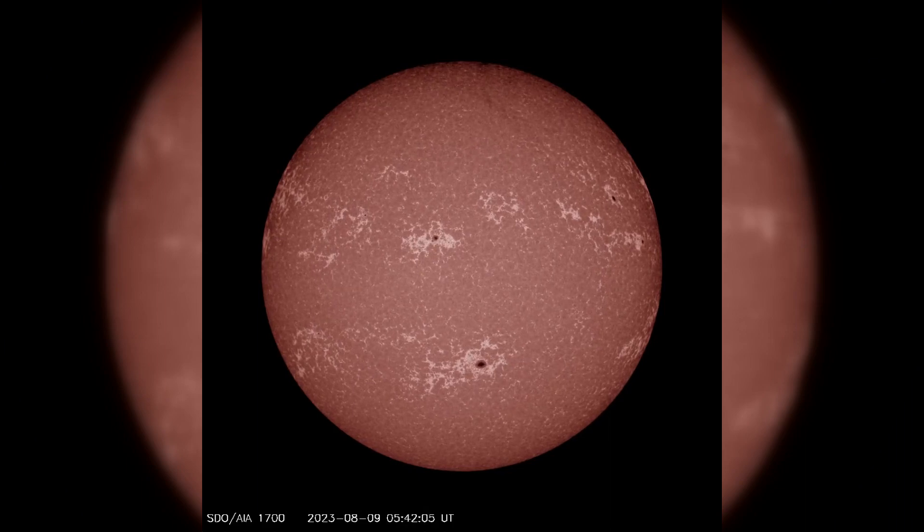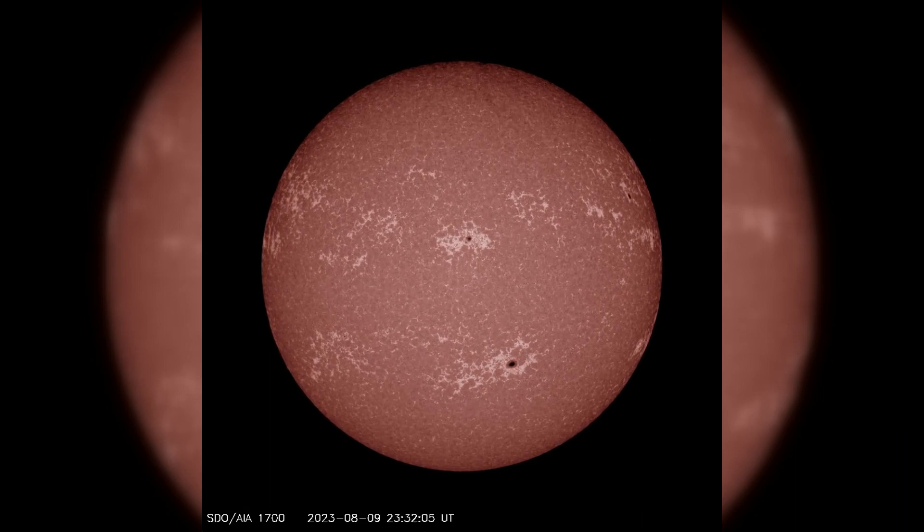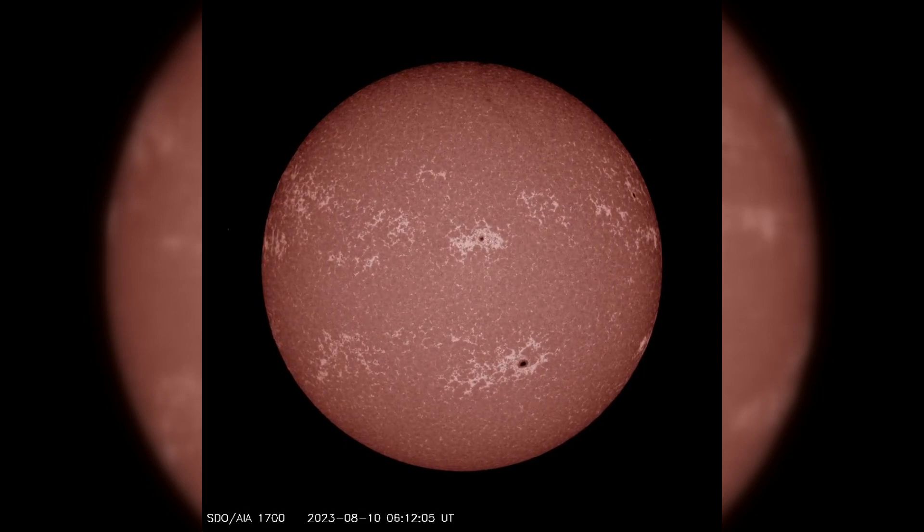Looking ahead, there's a chance of M-class solar flares on August 10th, as Region 3387 is just beyond the solar limb.